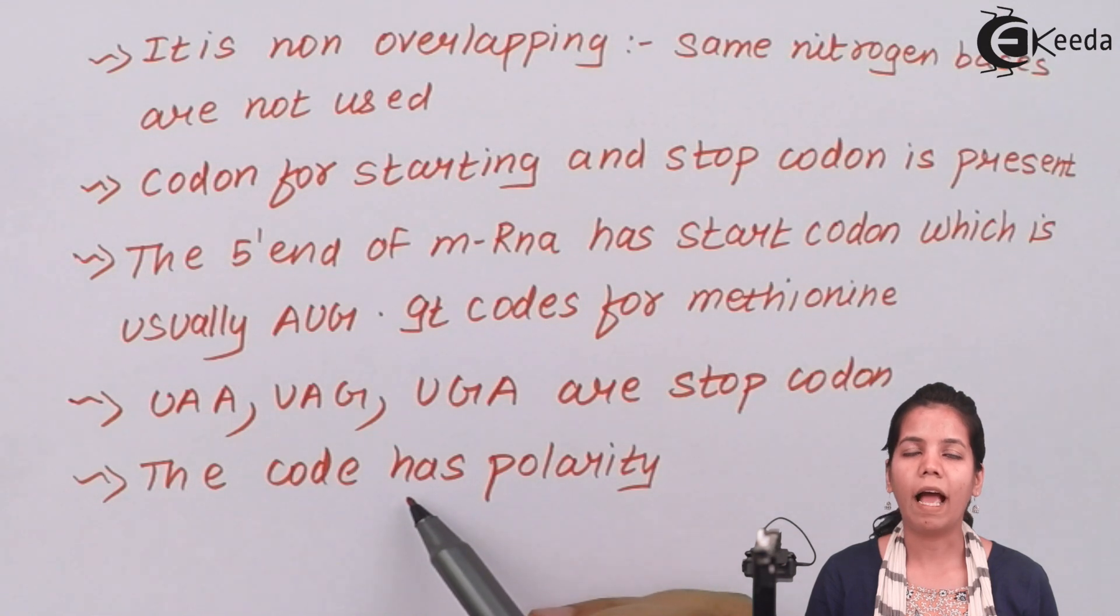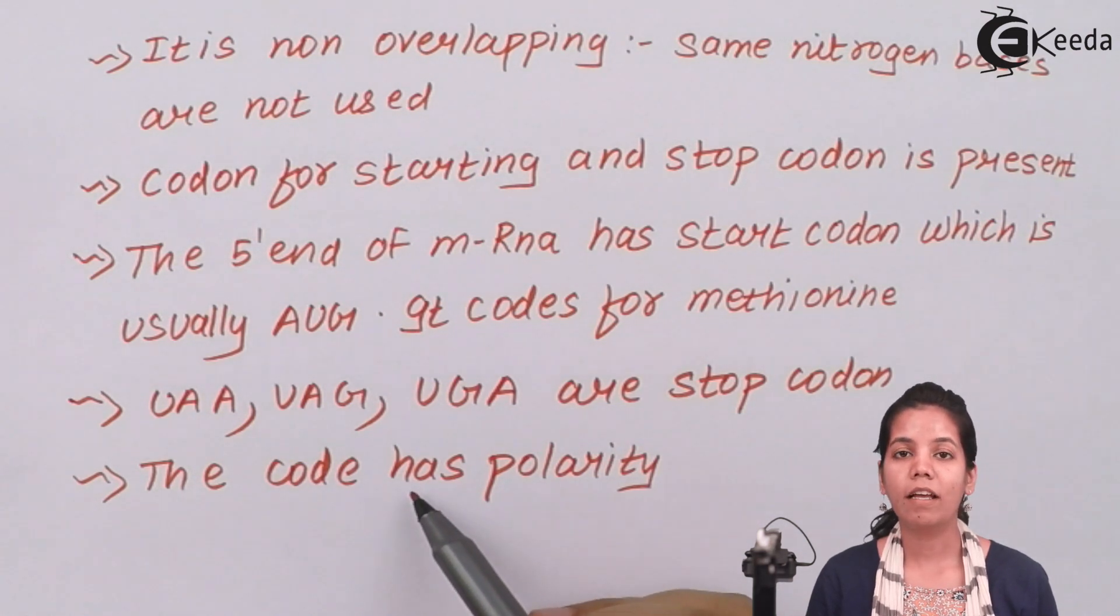Lastly, the genetic code has polarity that is it is read in certain direction that is from the orientation of mRNA, that is in 5 prime direction to 3 prime direction. This is the way which proteins are synthesized.